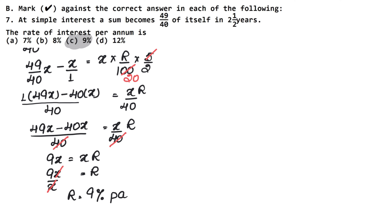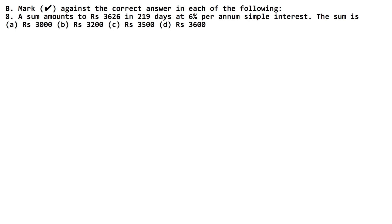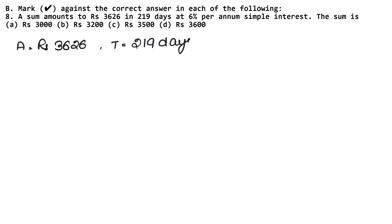Let's do the next question. A sum amounts to rupees 3626 in 219 days at 6% per annum simple interest. We need to find the sum. So what we know: Amount is ₹3626, Time is 219 days, Rate is 6% per annum, and the principal is unknown — let it be x.